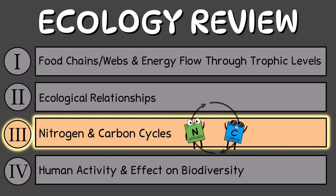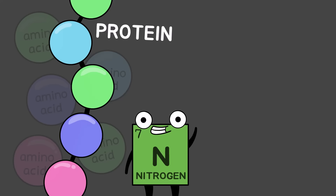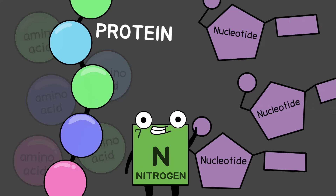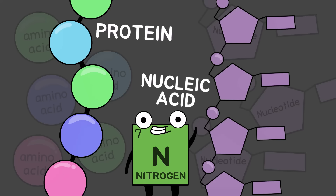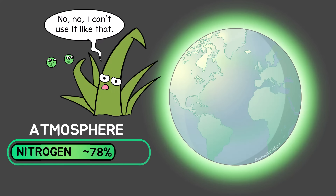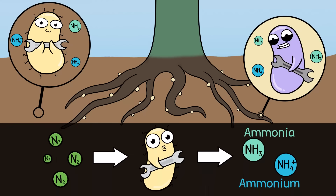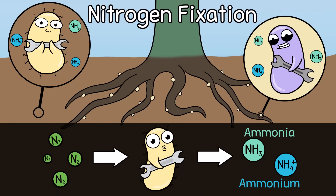Speaking of nitrogen, let's review the nitrogen and carbon cycles. Nitrogen is a critical element in amino acids, which are the monomers of proteins, and also in nucleotides, which are the monomers of nucleic acids — important biomolecules for life. The atmosphere is around 78% nitrogen, but nitrogen generally needs to be fixed into other forms to be useful for organisms. Nitrogen-fixing bacteria, found in the soil or some plant roots, fix nitrogen into ammonia and ammonium — that's nitrogen fixation.